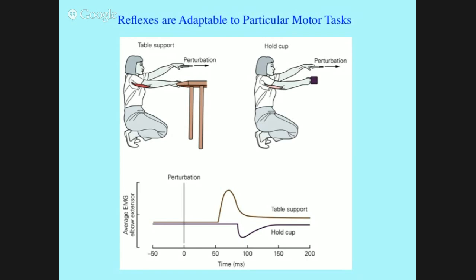Obviously this is not a simple reflex, but the same kind of concept applies. The example I'll give a bit later concerns the reflexes triggered by the Golgi tendon organ. In the perfectly resting condition, it responds to muscle contraction by causing relaxation of that muscle. That same reflex during walking actually leads to excitation. So reflexes really are under a lot of control — they're adapted to whatever's going on.